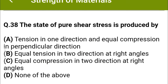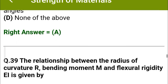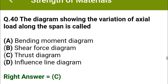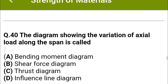Next question: The state of pure shear stress is produced by — option A: tension in one direction and equal compression in perpendicular direction, option B: equal tension in two directions at right angles, option C: equal compression in two directions at right angles, option D: none of the above. The correct answer is option A: tension in one direction and equal compression in perpendicular direction.